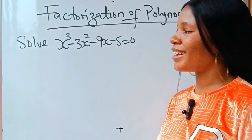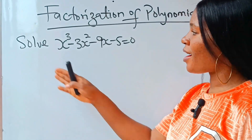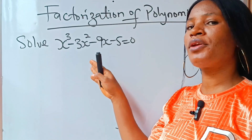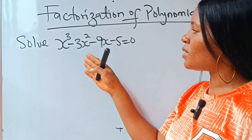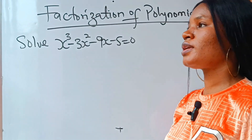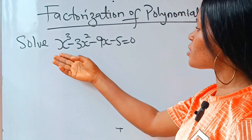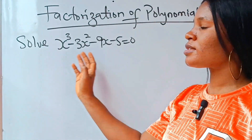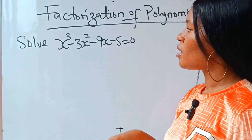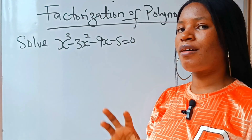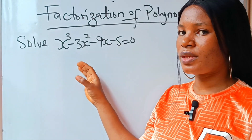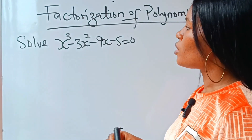Welcome back to today's class. We are asked to solve for x in this polynomial. For you to solve this, the first thing you need to know is this cannot be factorized easily. So we are going to use what is called trial and error in solving this.